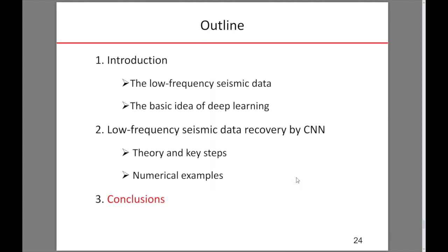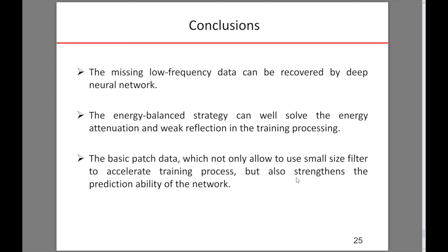The last section is the conclusions. There are three points. The first one is the missing low-frequency data can be recovered by a deep neural network. The second one is the energy-balanced strategy can well solve the energy attenuation and weak reflection in the training process. The last point is the basic patch data, which not only allows us to use small size filters to speed up the training process, but also strengthens the prediction ability of the network.